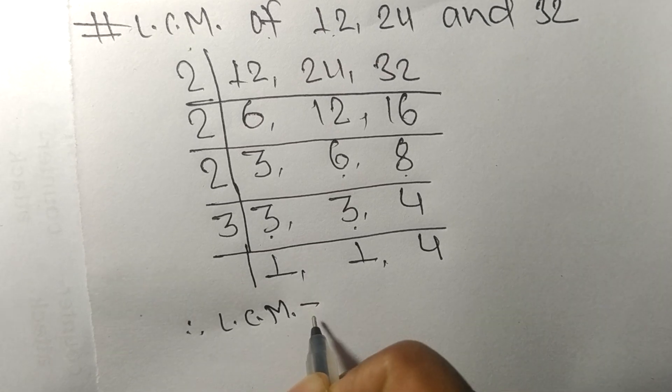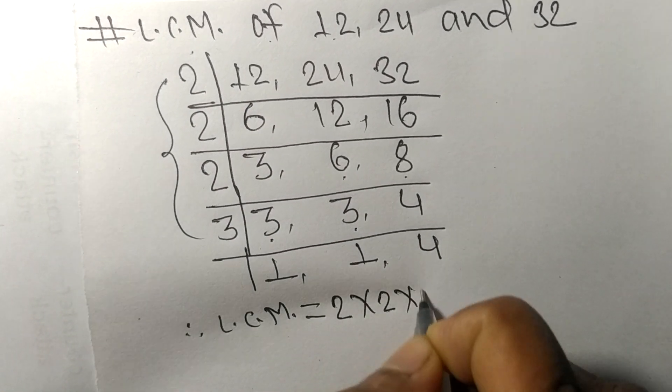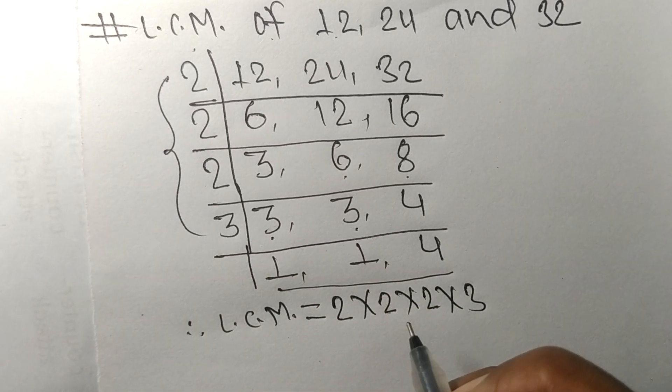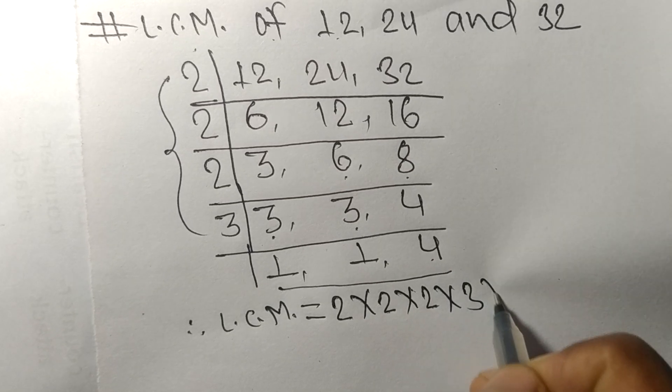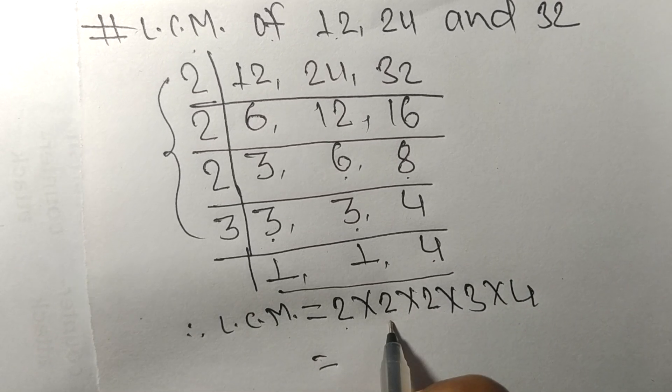So it is 4. 2 times 2 equals 4, 4 times 2 equals 8.